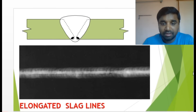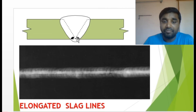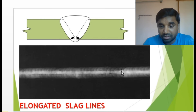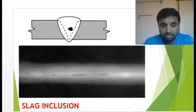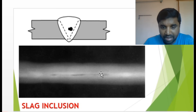Elongated slag inclusion — this means in the root area there is continuous slag. After the root is finished, if it is not cleaned properly before the second run, you need to repair that joint. It looks like a continuous black line in the image. Slag inclusion not in the root but in the middle of adjacent runs also shows as a black thread-like line in the radiograph.